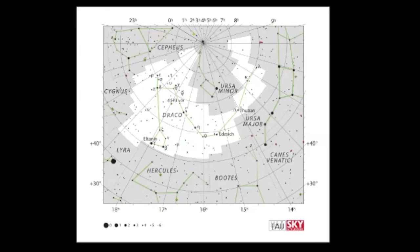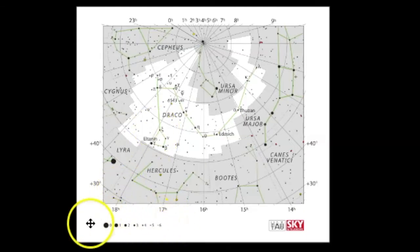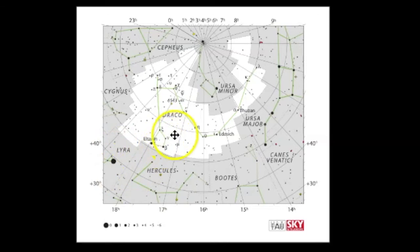Now let's review the pattern that Draco makes across the sky. Here we have the official star map of Draco and you can see all the constellations that surround it, including Ursa Minor, Ursa Major, Cepheus, Hercules, Boötes, Lyra, and Cygnus. A lot of constellations that are really easy to identify, but notice the magnitude scale — zero would be the brightest magnitude, like the star Vega in the constellation Lyra, but most of the other stars of Draco are pretty faint, of fourth magnitude and dimmer.